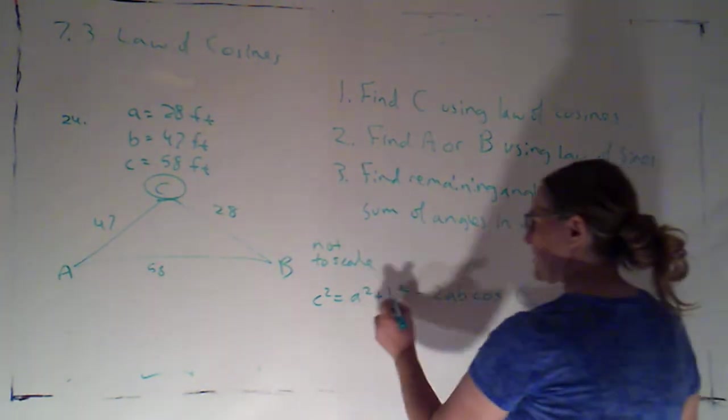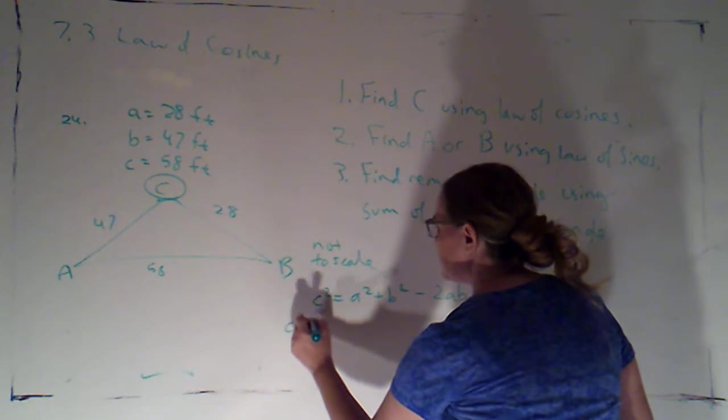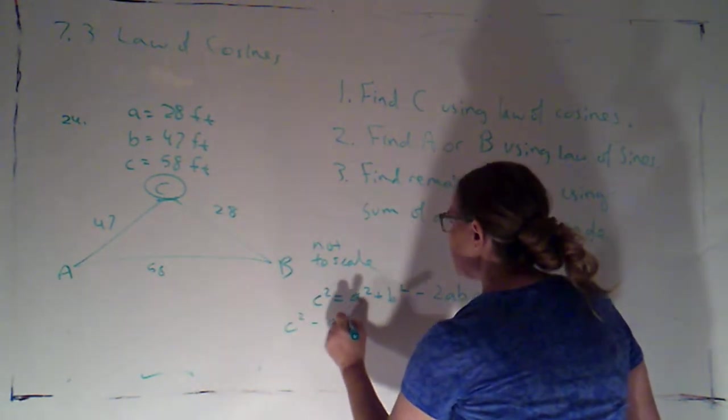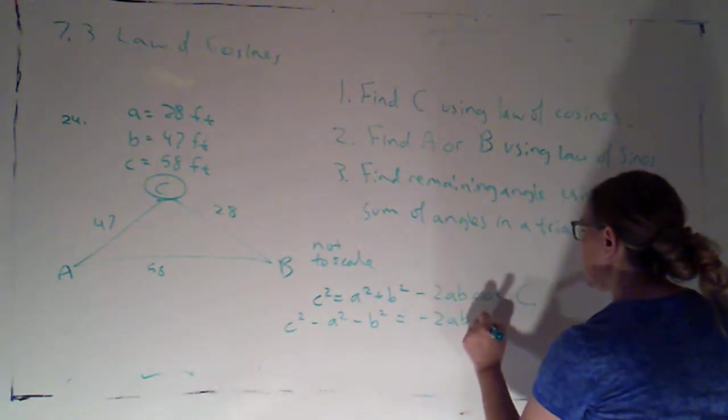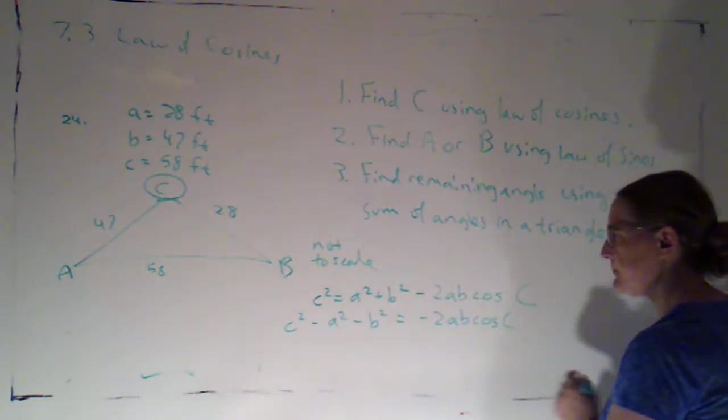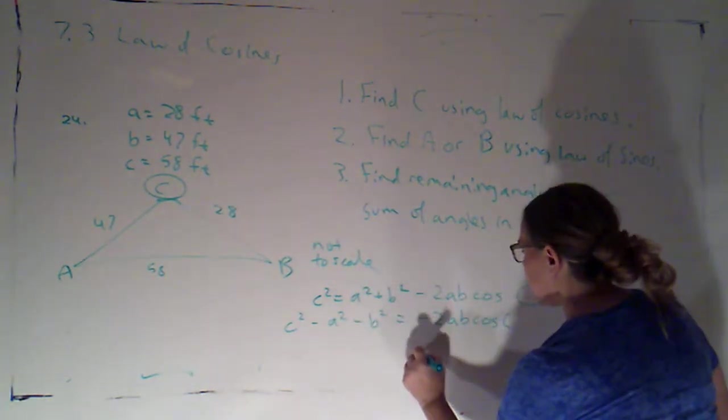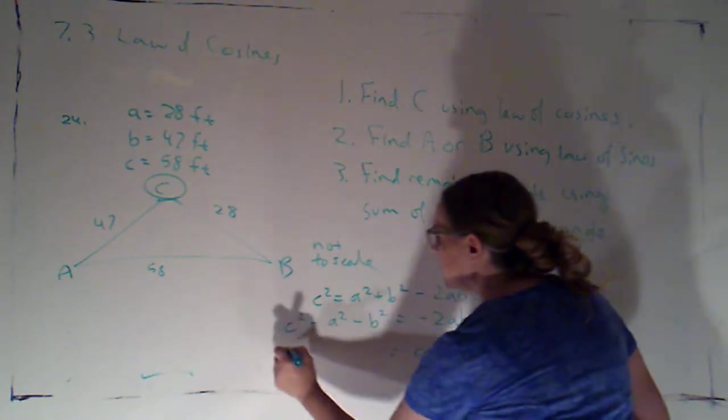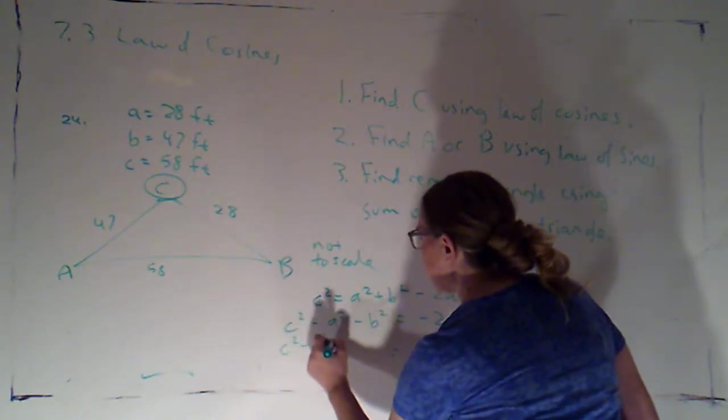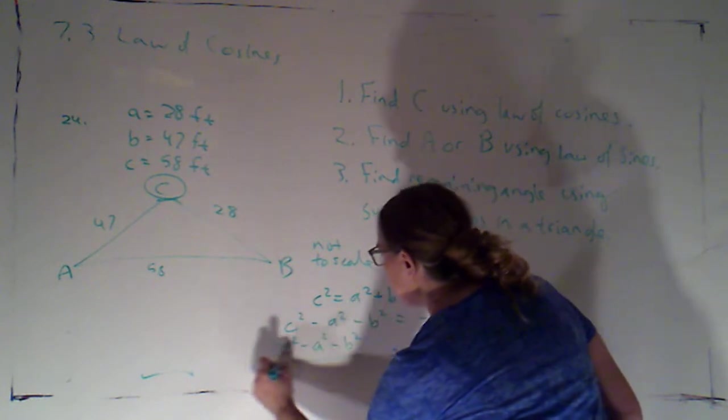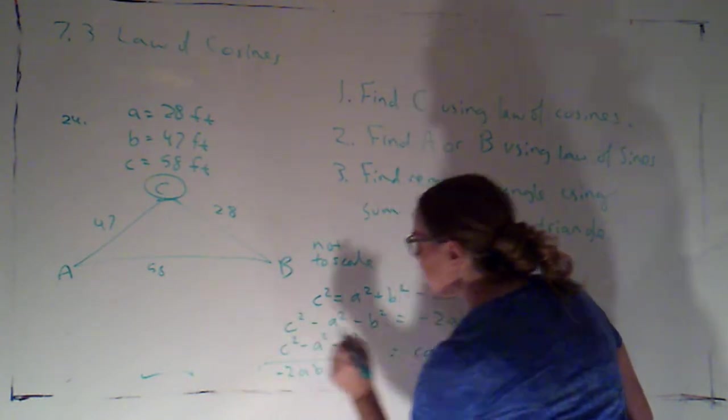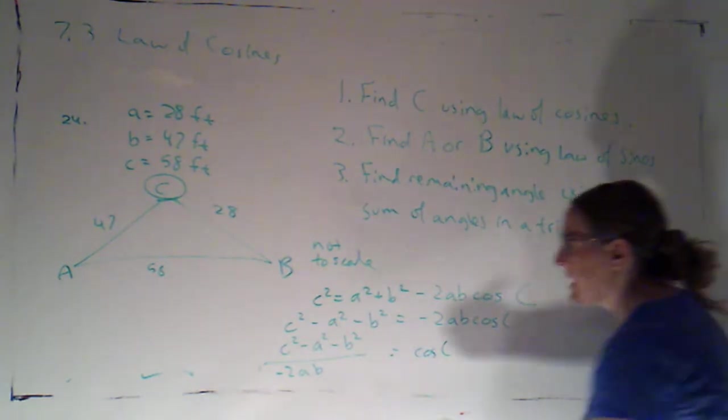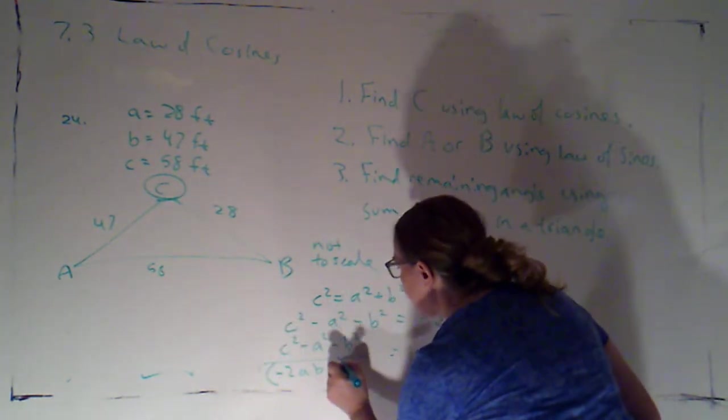So I'm going to subtract over the A squared and the B squared. So C squared minus A squared minus B squared equals negative 2AB times cosine of C. So cosine of C will equal C squared minus A squared minus B squared all divided by negative 2 times A times B, and I'm going to put that in parentheses.